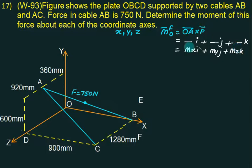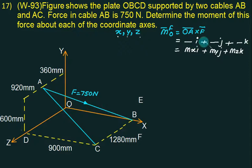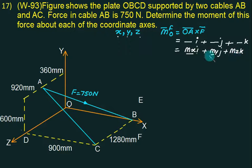If you are given multiple axes, select the common point. If X, Y, Z are given, your common point is always the origin. Find the moment, split it into I, J, K components. Compare the coefficient of I to get M_X, compare the coefficient of J to get M_Y — the moment about the Y axis — and similarly get the moment about the Z axis.